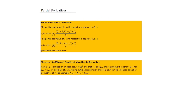We then looked at partial derivatives — new material. For a function of two variables, we take the derivative with respect to X (F partial X) and with respect to Y (F partial Y). This uses the standard Calculus 1 definition of a derivative, but one parameter is held fixed while the other is varied.